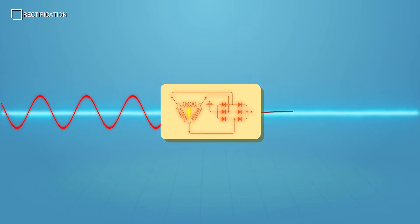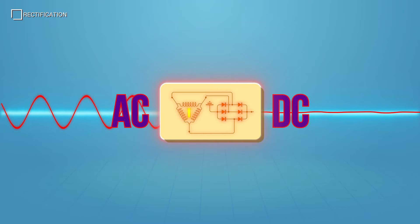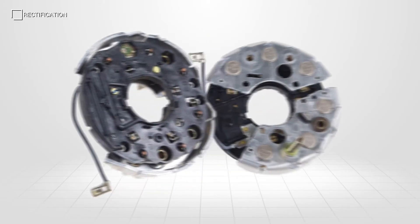Rectification is the process of converting alternating current into direct current. A vehicle's alternator uses a diode bridge to perform this task.